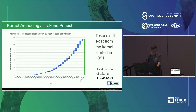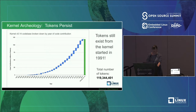One of the key things is that tokens and evidence in the kernel persist — every release is built on prior releases. We can actually still find tokens in the source code repository from that very first release back in 1991. Currently, looking at the whole size of the tokens for the kernel, there are 119 million tokens that make up the kernel today as of 5.14, segmented by year.